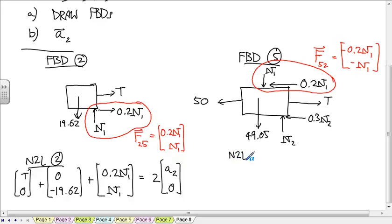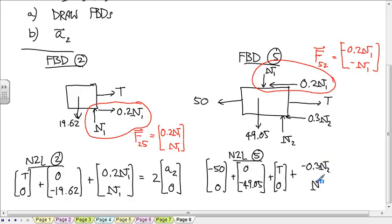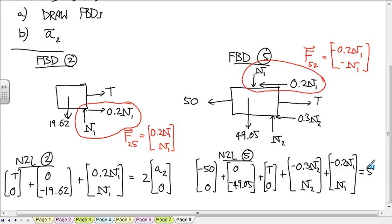And then for the five-kilogram box, we have negative 50, 0 plus 0, negative 49.05, plus T,0, plus the contact with the ground is negative 0.3 N2, and the contact with the two-kilogram box is negative 0.2 N1, negative N1. And all these added up have to be equal to 5 times, what do we know about the acceleration of the five-kilogram box? Only X and Y, so I'll write this as A5, 0.